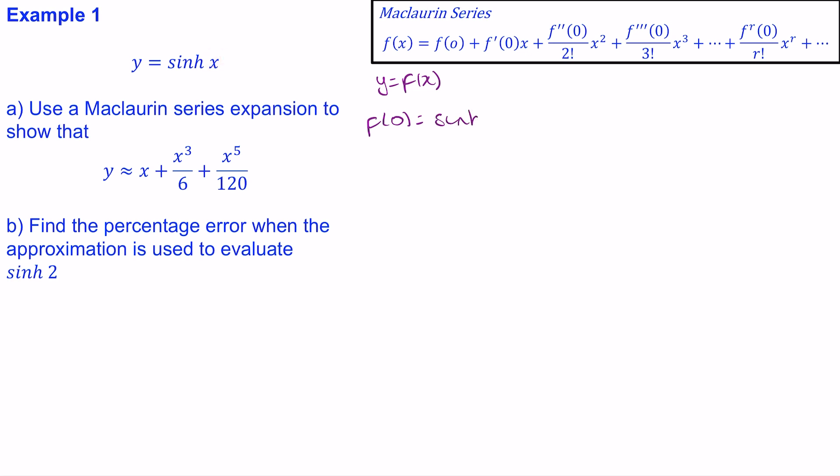So we get sinh(0). To work out sinh(0), well the sinh(x) is e^x minus e^(-x) over 2, and when we substitute 0 in here we get 1 minus another 1, and 1 take away 1 is 0. So sinh(0) will be 0.